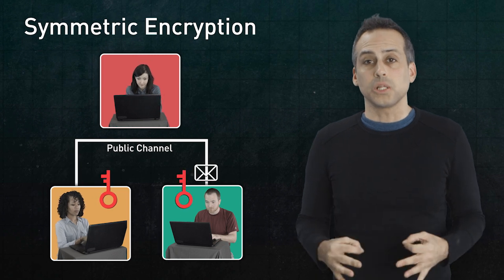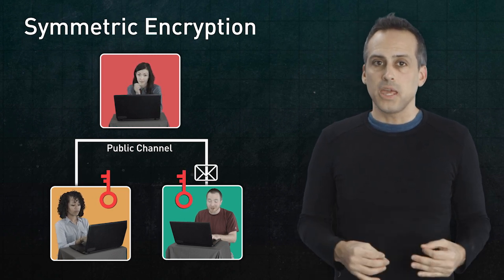Most digital transmissions are encrypted and decrypted symmetrically using a single shared key for both operations. But how do you share a key in the first place when eavesdroppers are lurking?